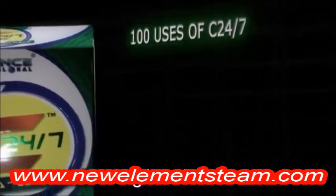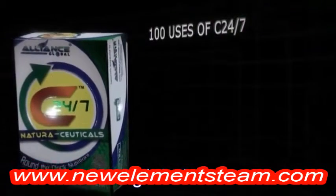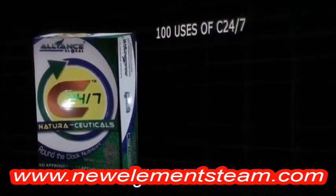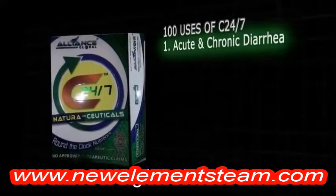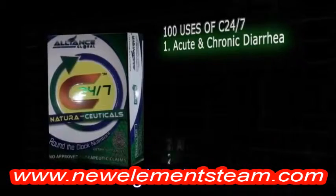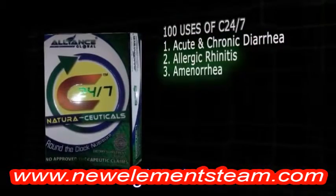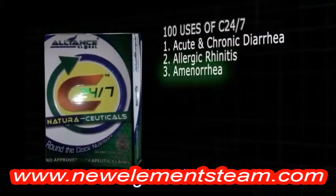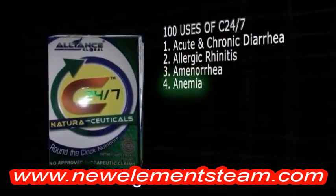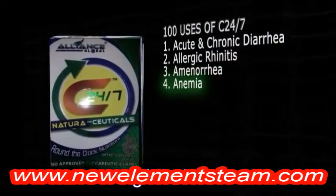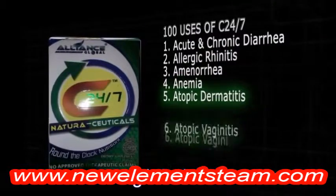100 uses of C-247. 1. Acute and Chronic Diarrhea. 2. Allergic Rhinitis. 3. Amenorrhea. 4. Anemia. 5. Atopic Dermatitis.